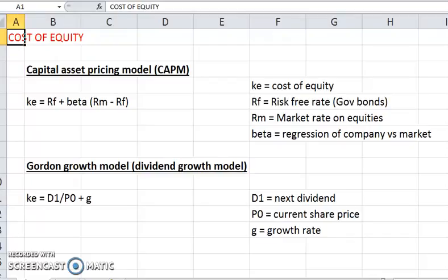Hi, in this short clip we'll have a brief look at the two ways you can calculate the cost of equity in your second year of studies. There's other ways as well which we'll only deal with next year. So the first one is the Capital Asset Pricing Model or CAPM, the second one is the Dividend Growth Model.